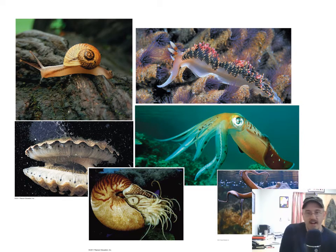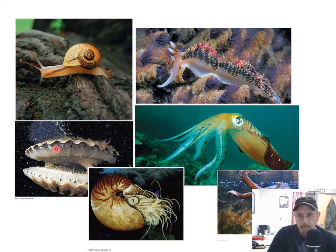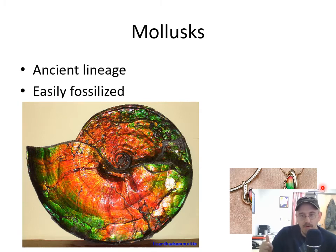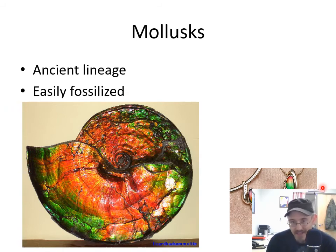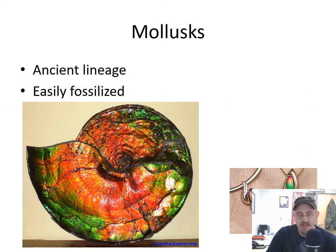Molluscs — there are lots of different kinds. We have gastropods, cephalopods, and bivalves, which we've already talked about in lab. Gastropods crawl on their bellies — the name means 'belly foot.' Cephalopods have tentacled heads, and bivalves open like a clam. This group fossilizes well because they have shells. Fossil mother of pearl from these things makes really pretty jewelry — it's called amylite. Easily fossilized, ancient lineage, lots of fossils from this group.